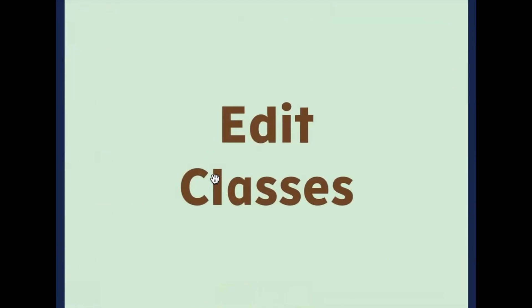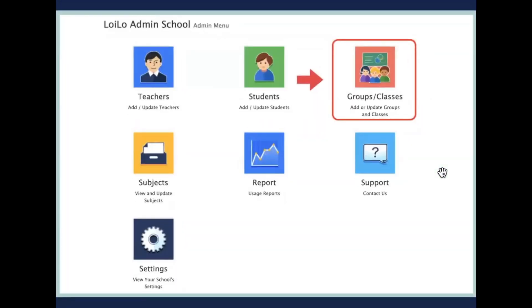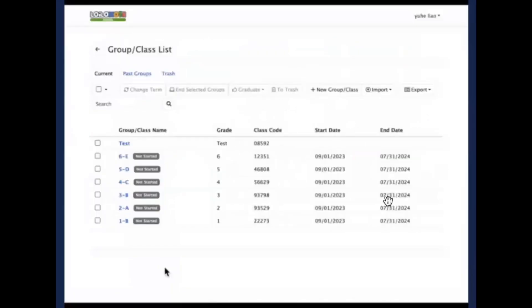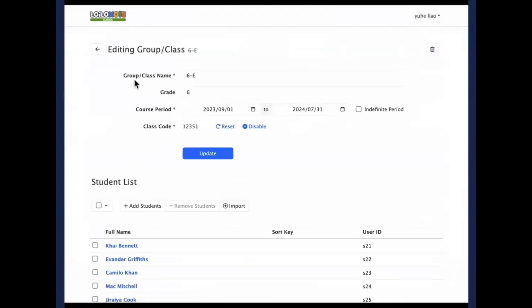Since we've already paired students with classes, if there's nothing to add, you don't have to do this step. But if you want to make changes — for example, if you want to change the class name, grade, course period, or add students — you can go back to the group of classes and make those edits.